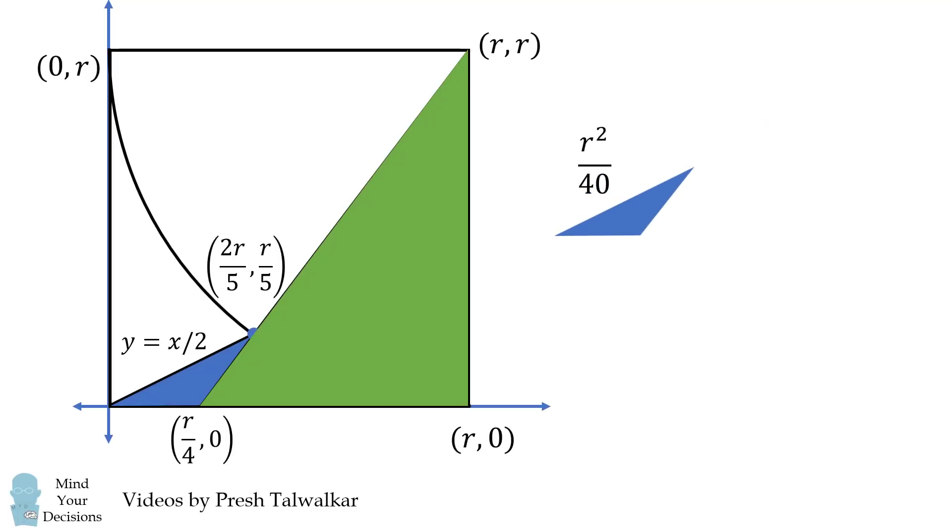We now want the area of this green triangle. Well, we pretty much have each of its dimensions. We can calculate that its height is equal to R, because it goes from R comma 0 to R comma R, and we can calculate its base, which goes from R over 4 to R. So this will be 3R over 4. Its area will be 1 half its base times its height, which simplifies to be 3R squared over 8.